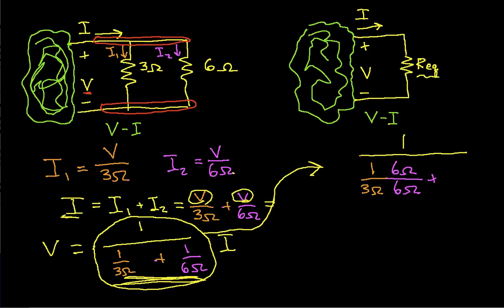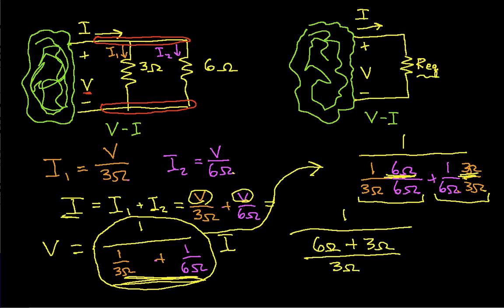So I'm going to take 1 over 3 ohms and multiply it by 6 ohms over 6 ohms, which I can do because 6 ohms over 6 ohms is 1. Then take the 1 over 6 ohms and multiply it by 3 ohms over 3 ohms. So now both of these have the same denominator, which is 3 ohms times 6 ohms. The top one here is just going to be 6 ohms because I'm multiplying it by 1, and the top here is going to be 3 ohms. So I can rewrite this as 1 over my 6 ohms, this guy, plus my 3 ohms, this guy, over the product of 3 ohms and 6 ohms.